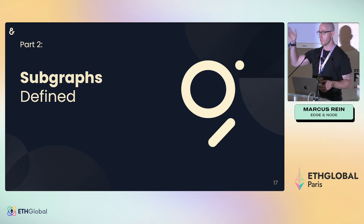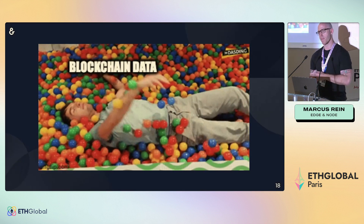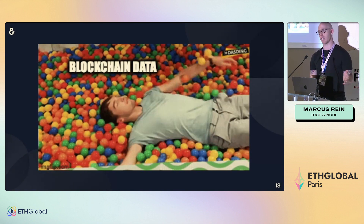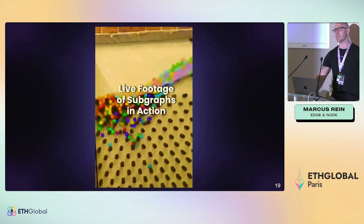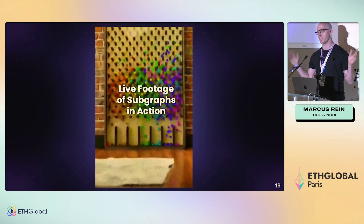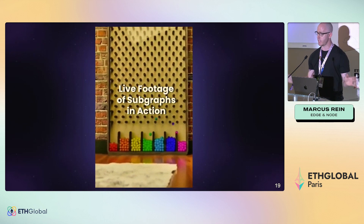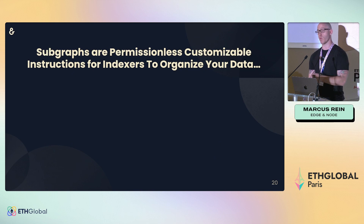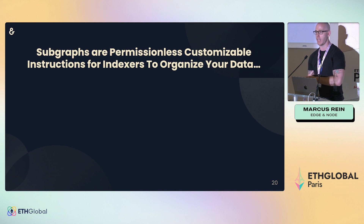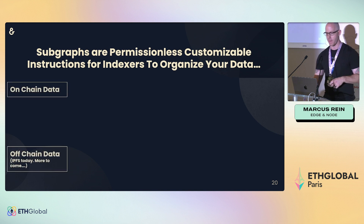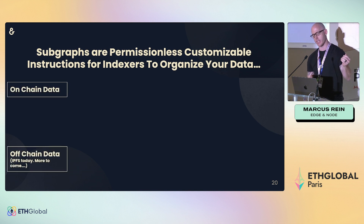We are swimming in blockchain data all the time as developers — it's disorganized, but we can index it. This is basically what a subgraph does: it takes all the data and puts it into a nice clean little bucket. Subgraphs are permissionless, customizable instructions for indexers to organize your data. Build these instructions and they are sent to indexers to get your data back.